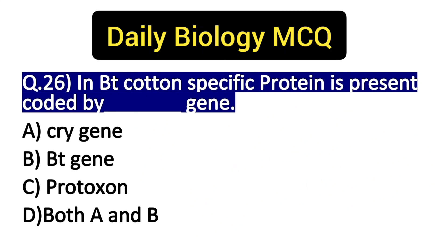BT cotton के plant में specific proteins होती हैं जो कि inactive form में present होती हैं। वो encoded होती हैं by cry gene। cry gene के भी आगे specific types मिलेंगे — कुछ boll worm के लिए — इसको हम फिर कभी discuss करेंगे।